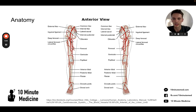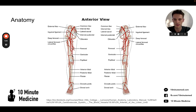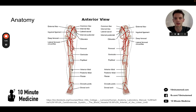This artery then continues its course down the thigh as the femoral artery, becoming the popliteal artery behind the knee — which you can feel on your pulse — continuing down and branching off into the anterior and posterior tibial artery and the dorsalis pedis artery. Peripheral arterial disease can happen across all these arteries, but particularly in the lower limb.